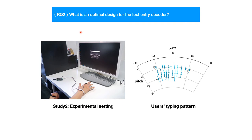For the second research question — what is the optimal design for the text entry decoder — we conducted the second study to collect user typing data. We did not have a decoding algorithm at this stage; the system always displayed the correct character no matter how the participant typed. We collected user typing patterns and found some interesting results. For example, the figure shows the typing locations of the 26 letters. The keyboard in most users' minds was fan-shaped, not rectangular. Finally, we designed a text-entry decoder according to the findings, and results show that the decoder supports text entry with word suggestions.